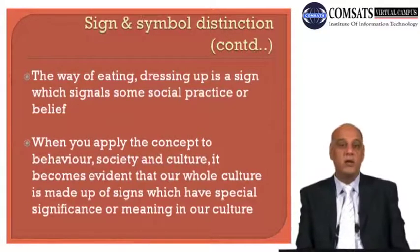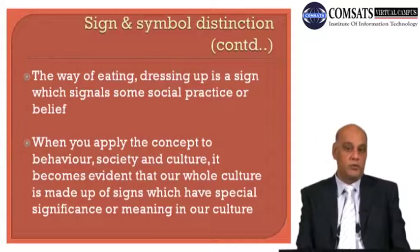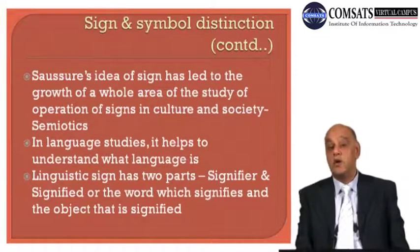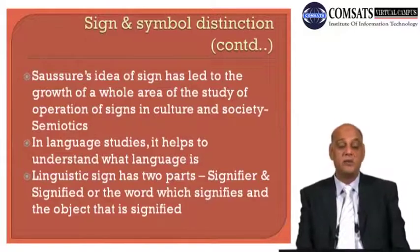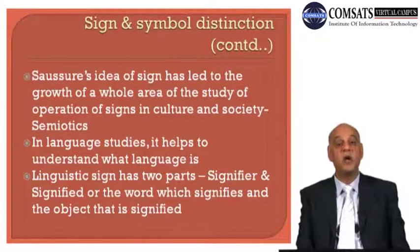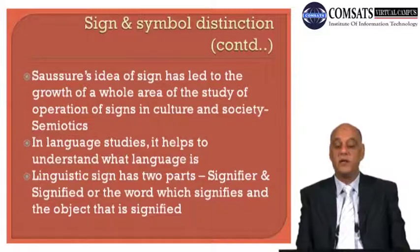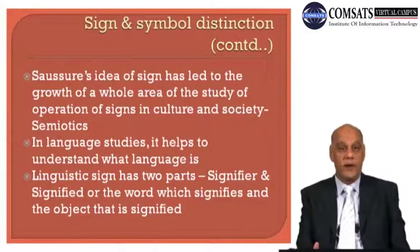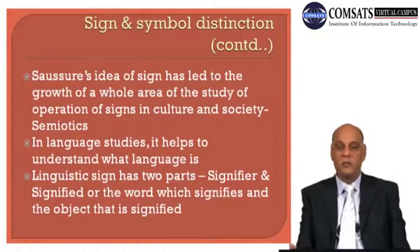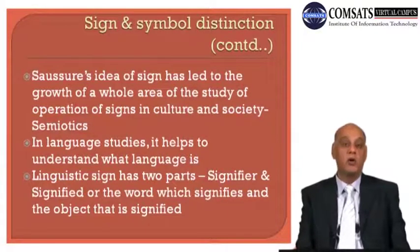Signs give some importance and meaning to objects, and that meaning is interpreted and conveyed. Saussure's idea of sign has led to the growth of a whole area of study called semiotics — the study of the operation of signs in culture and society. We study how signs are operating, how some signs mean something, how they are interpreted, and what importance they have in a certain culture or society.